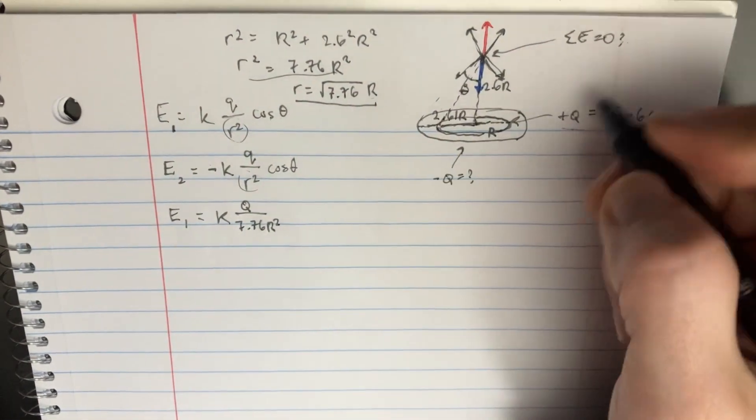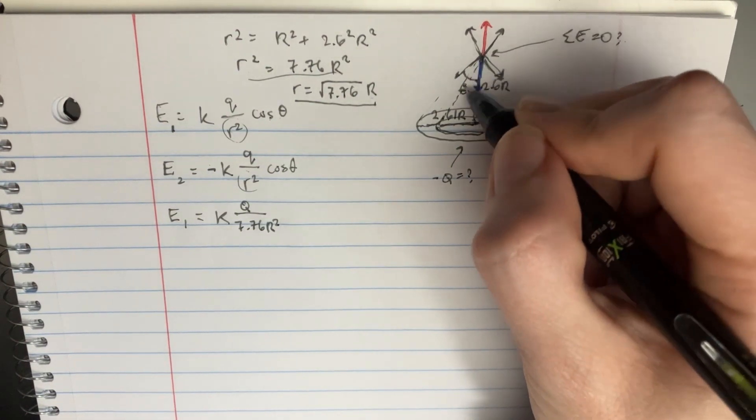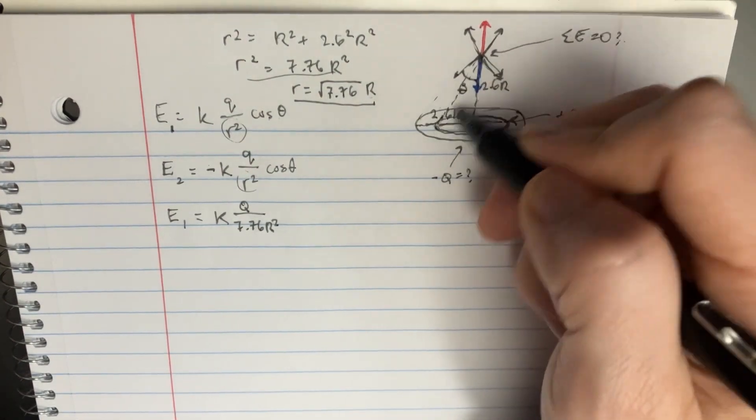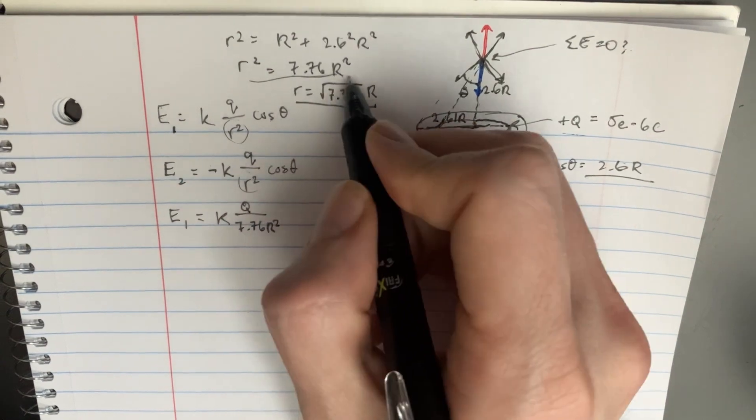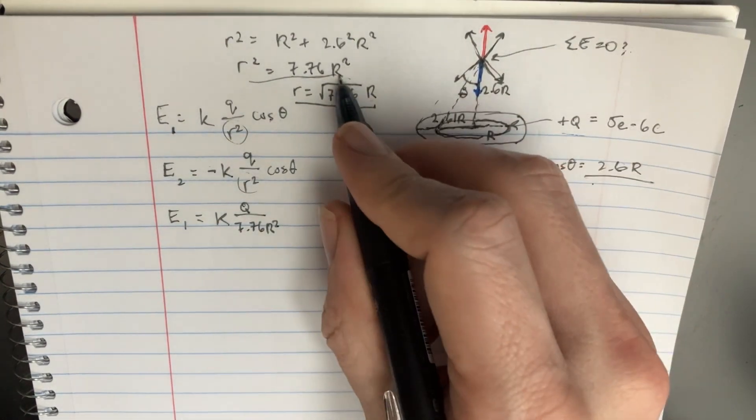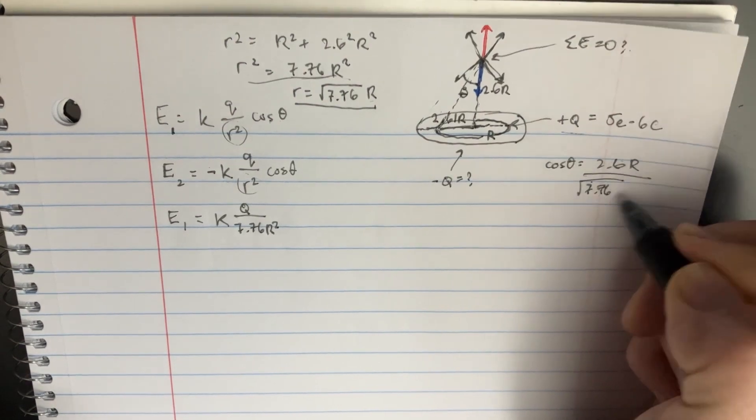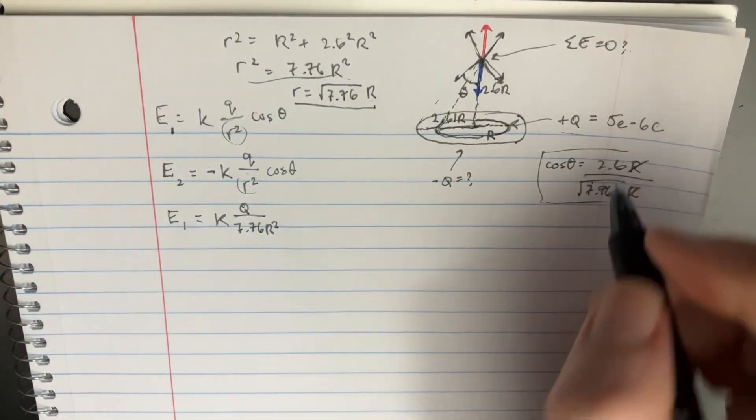Cosine theta is going to be adjacent, which is 2.6 r, divided by the r squared, which is in this direction, and that was this one, right? Well, it's actually just the hypotenuse, so it's the square root of 7.76 r. And these r's are going to cancel, and we're going to be left with the cosine of theta over here.